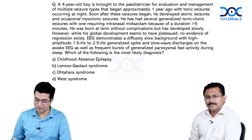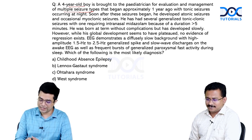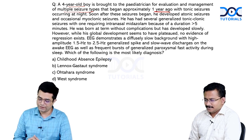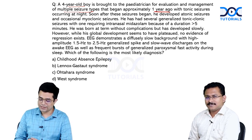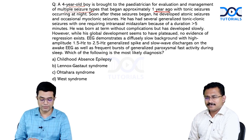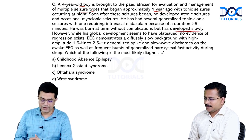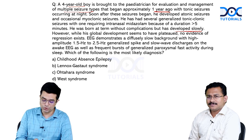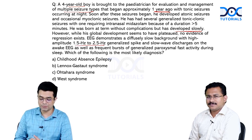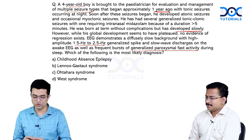The question says: a four-year-old boy is brought to the pediatrician for evaluation and management of multiple seizure types. The seizures began approximately one year ago, around three years of age, with tonic seizures occurring at night. He then developed atonic seizures and occasional myoclonic seizures. He has had several generalized tonic-clonic seizures, one requiring intranasal midazolam because the duration was more than five minutes. He was born at term without complication but has developed slowly; his global development seems to have plateaued, though there is no evidence of regression. EEG demonstrates a diffusely slow background with high amplitude 1.5 to 2.5 hertz generalized spike and slow wave discharges on a wake EEG, and frequent bursts of generalized paroxysmal fast activity during sleep. What is the most likely diagnosis?